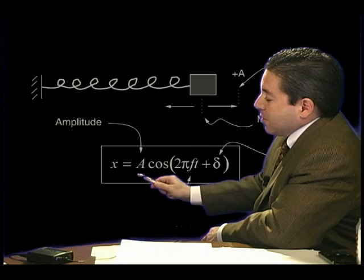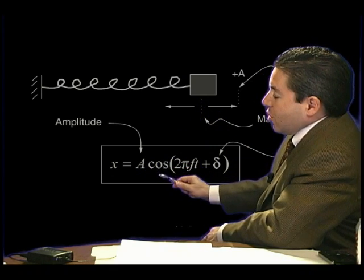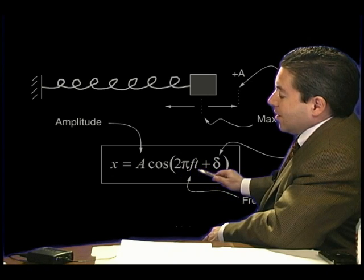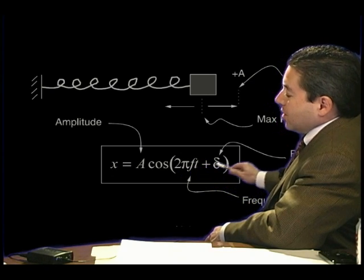What this tells you is that x, the displacement away from zero, the equilibrium point, is equal to the amplitude times the cosine of 2 pi times the frequency times the time plus the phase shift.